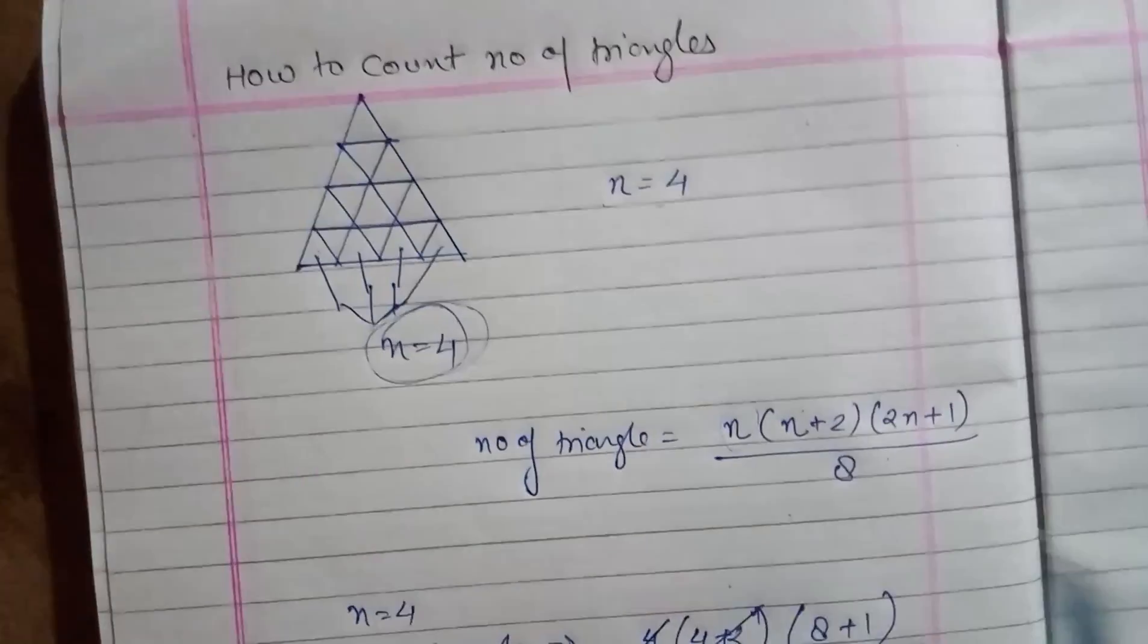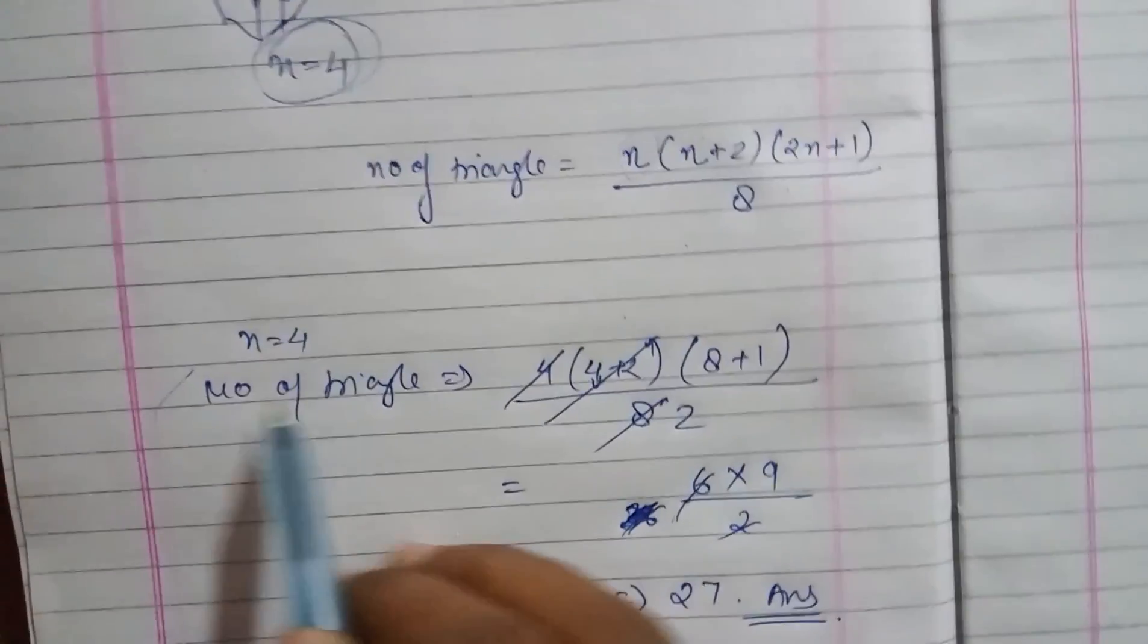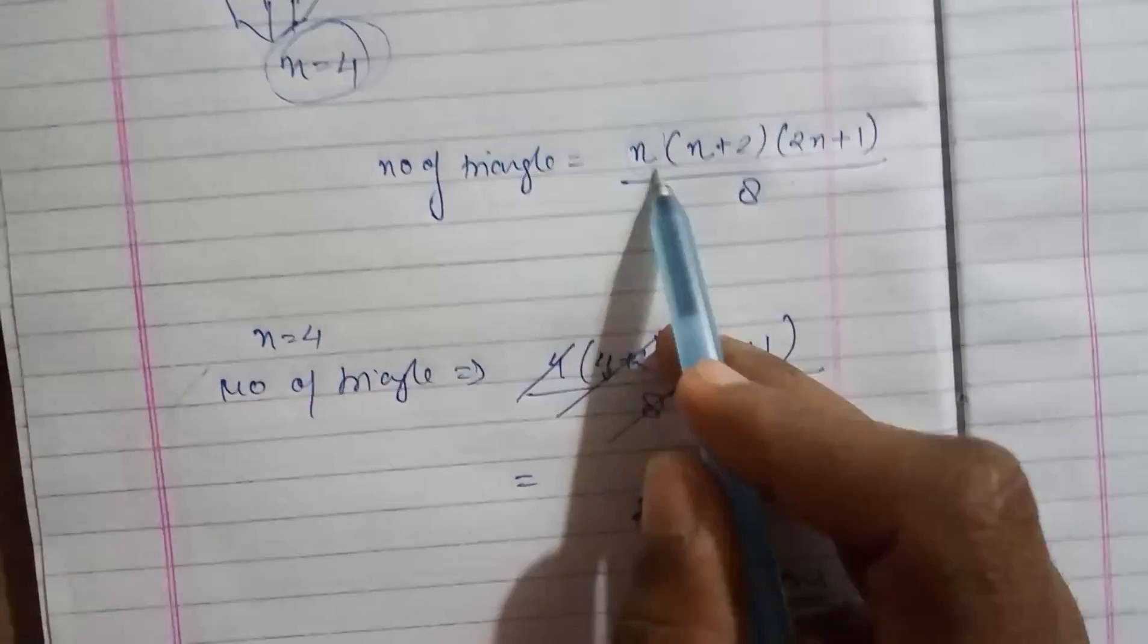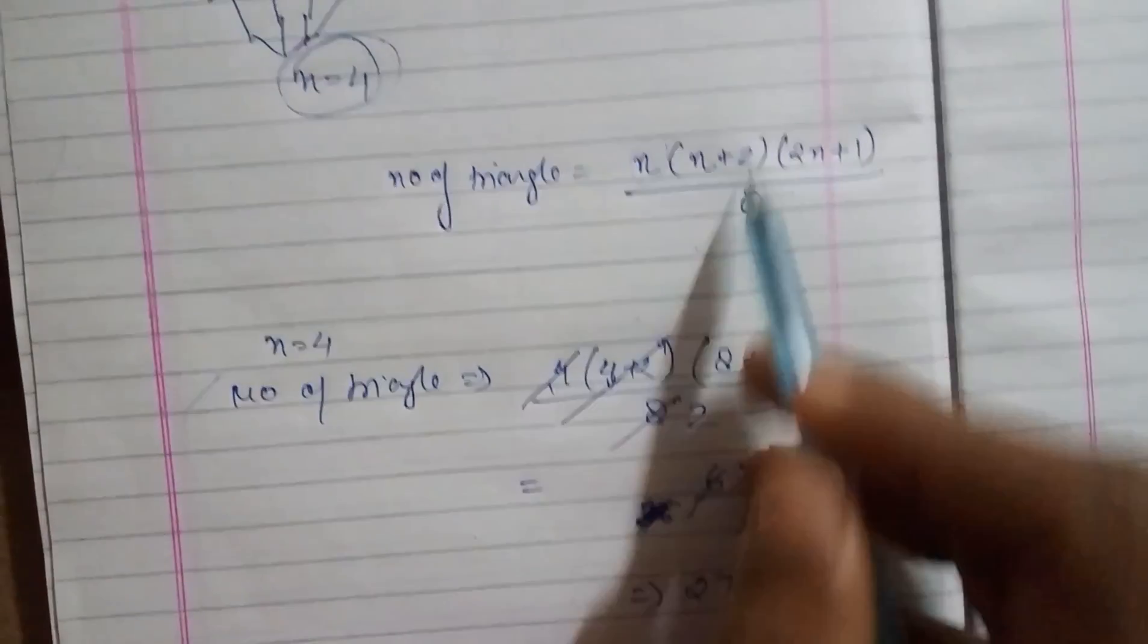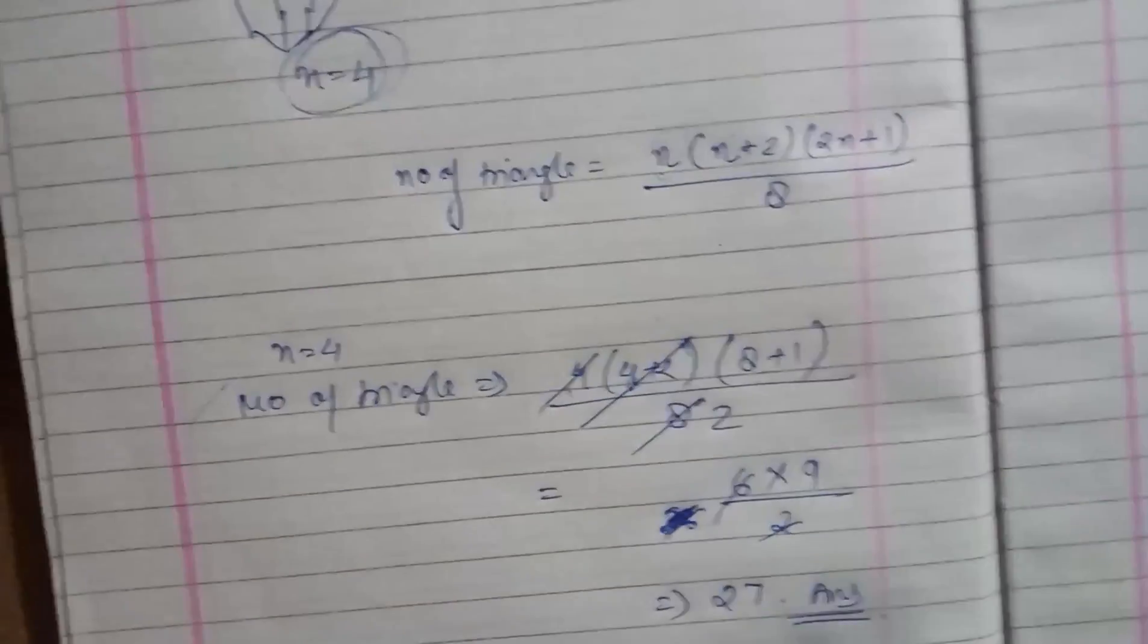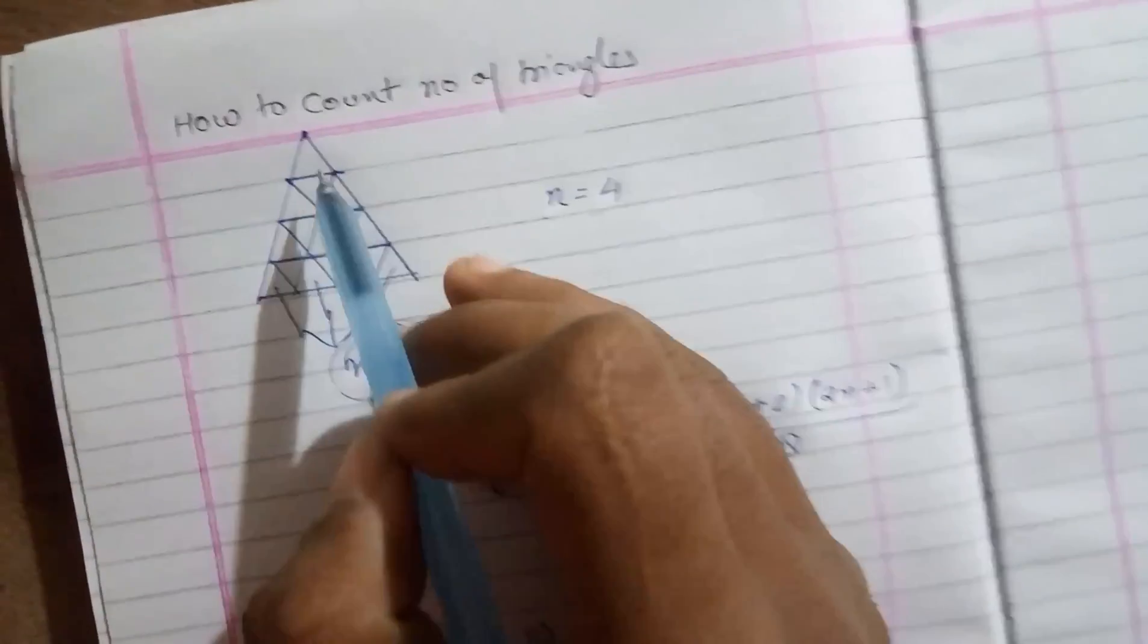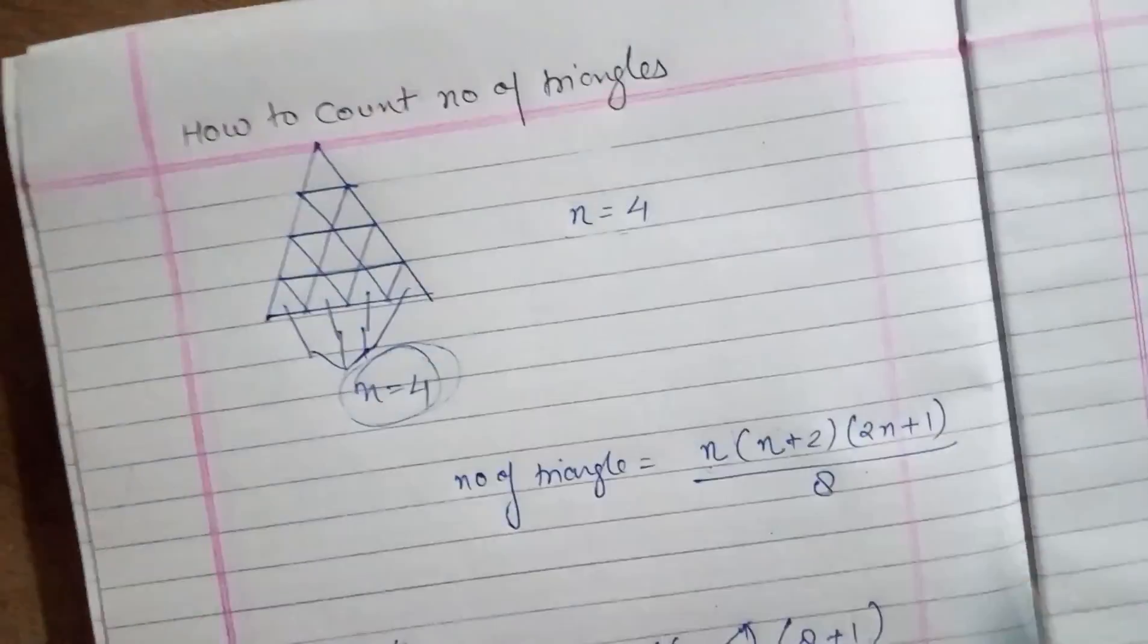Then we'll put n equals to four in the formula. Number of triangles equals to 4(4+2)(2×4+1)/8 equals to 4×6×9/8. Here we get n equals to 27. And if you count number of triangles by conventional method you will get the answer 27.